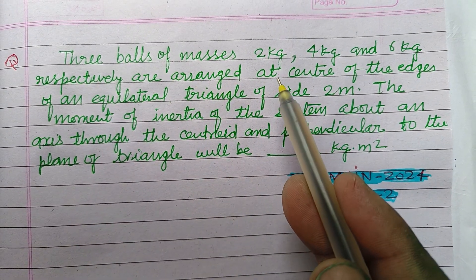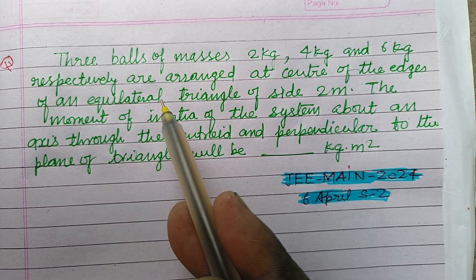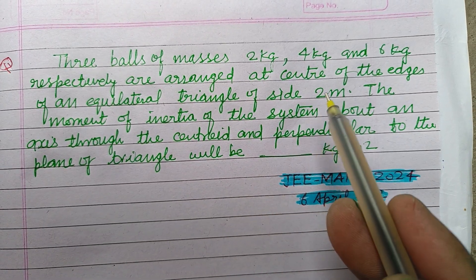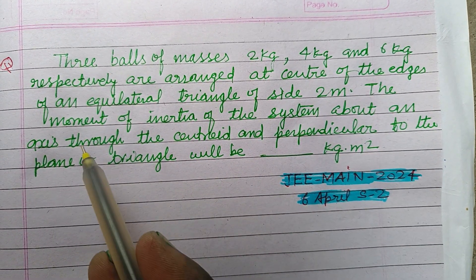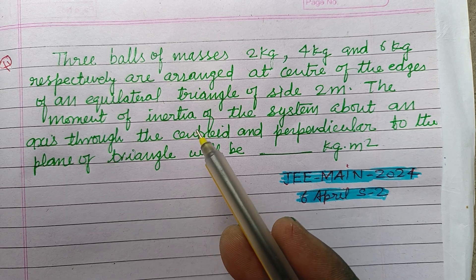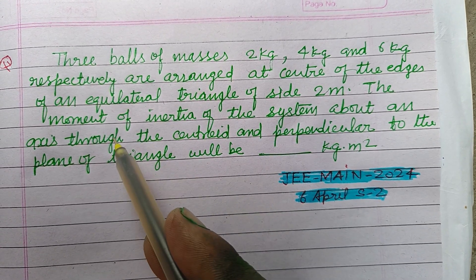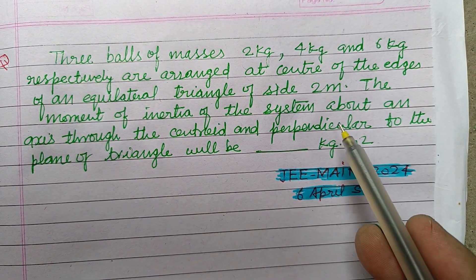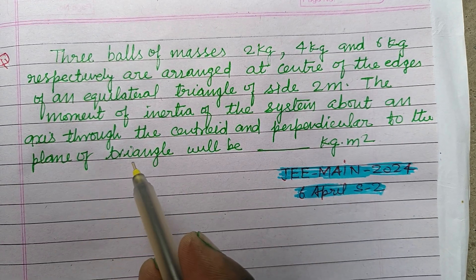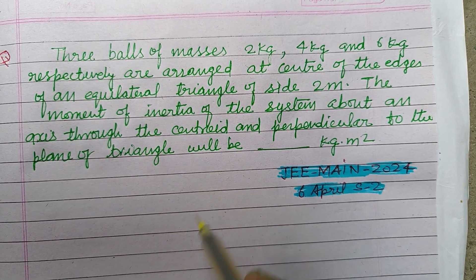Three balls of masses 2 kg, 4 kg and 6 kg respectively are arranged at the center of the edges of an equilateral triangle of side 2 meter. The moment of inertia of the system is about an axis through the centroid.